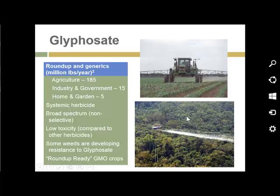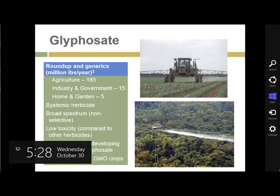Additionally, use of Roundup has been encouraged by the development of genetically modified crops that are Roundup Ready. A gene spliced into a bacterium has been added to corn and soybeans to make them resistant to Roundup, so a farmer can plant these crops and then apply Roundup to kill everything else in the field. This has led to significant increases in the amount of Roundup being applied.